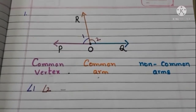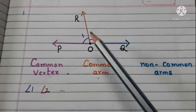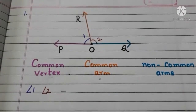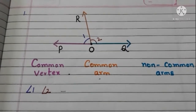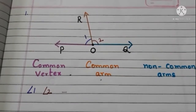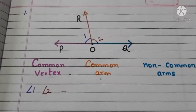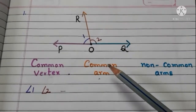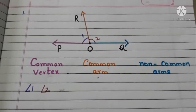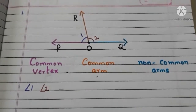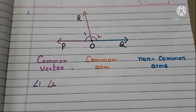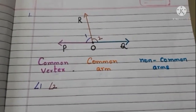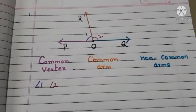Now let us see some more examples. Here, in this figure, 1 and 2 are two angles and we have to check whether these two angles are adjacent angles or not. For adjacent angles, there should be a common vertex, a common arm, and the non-common arms should be on either side of the common arm. Let us see if angle 1 and angle 2 satisfy these three rules.